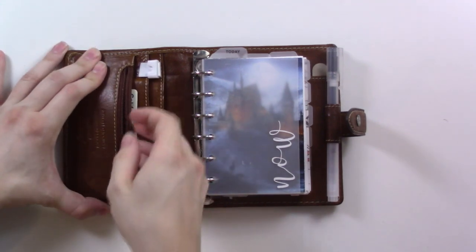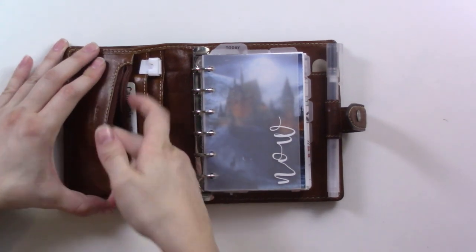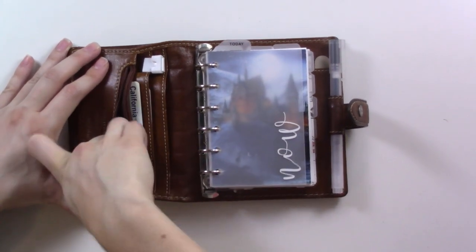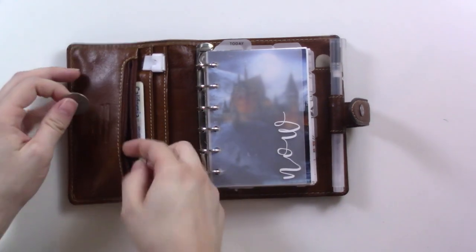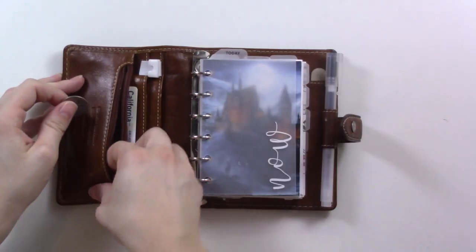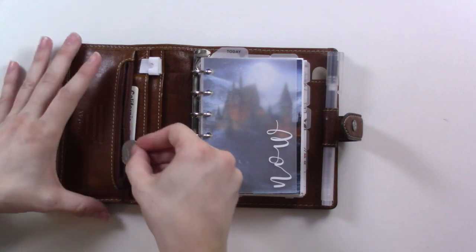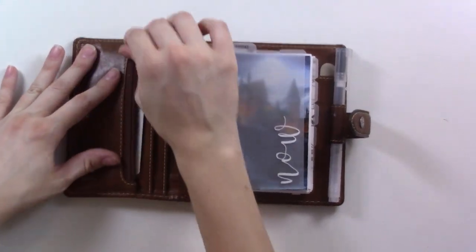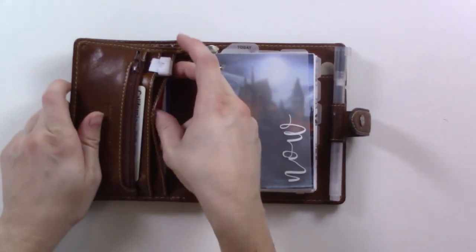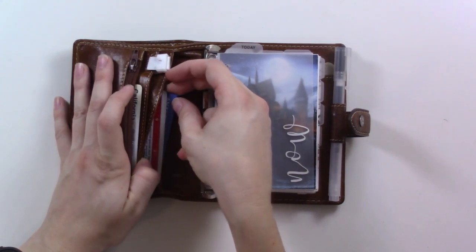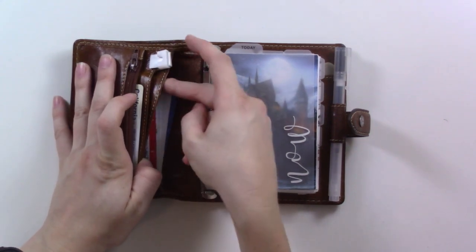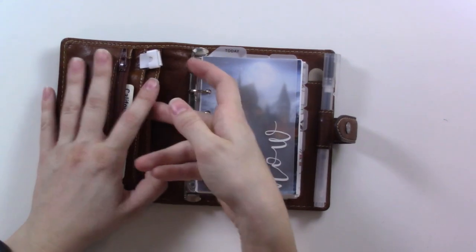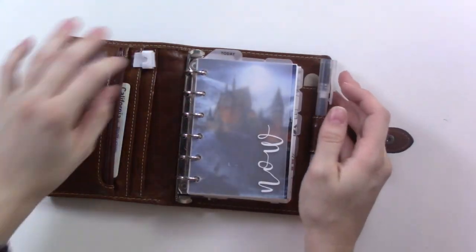I don't think I have any change in the front here. This is where the change goes. Oh I do, I have a quarter. I've got a diary key in here for some reason. I don't have a diary with a lock because I'm an adult. Back here is a punch card, has my library card, and my dental insurance card.